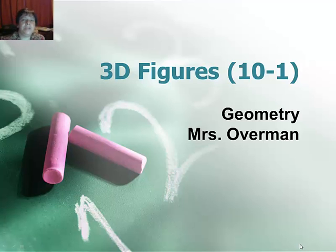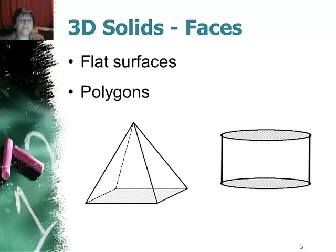In this video we're looking at 3D figures or solids and what they are made up of. So let's go ahead and start with faces. Faces are flat surfaces and they are polygons. That means the edges around the faces are straight. There are no curved edges.